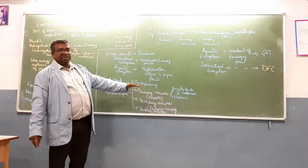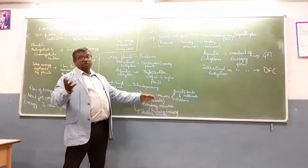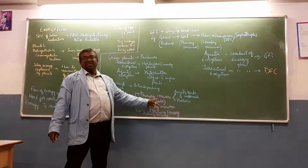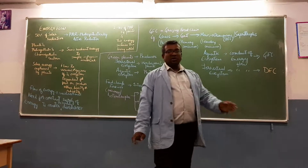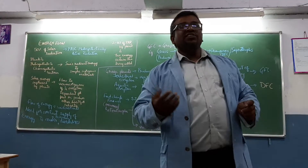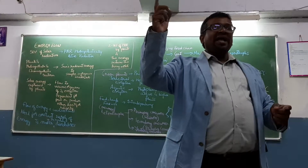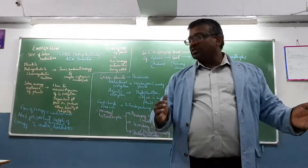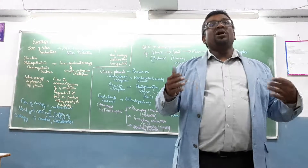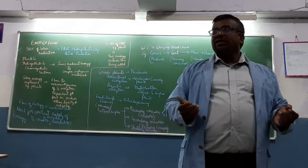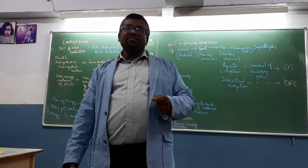Examples of primary consumers in terrestrial ecosystems include insects, birds, and mammals, as well as mollusks in aquatic contexts. To summarize: energy flow in an ecosystem is unidirectional — it cannot be circulated back to the sun. From the sun, energy flows through trophic levels, and as it flows from one level to another, there is a loss of energy at each step.